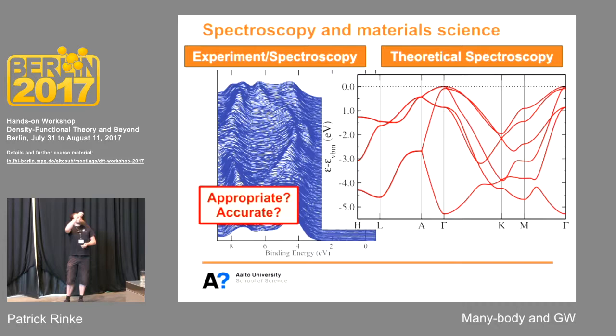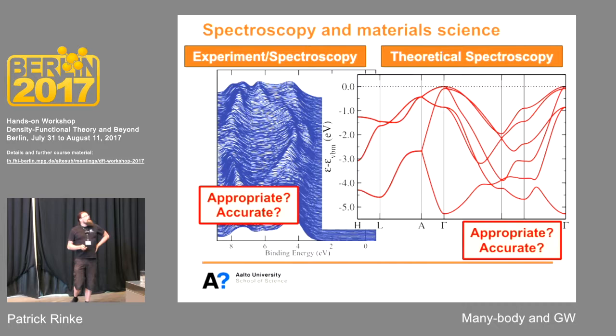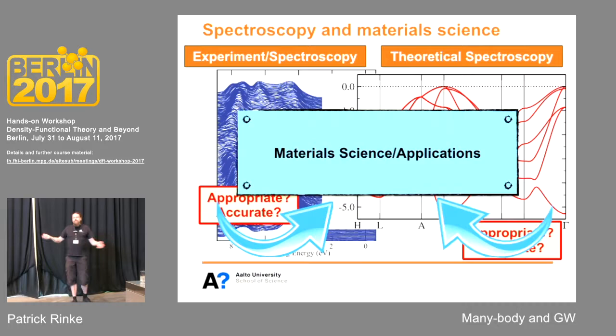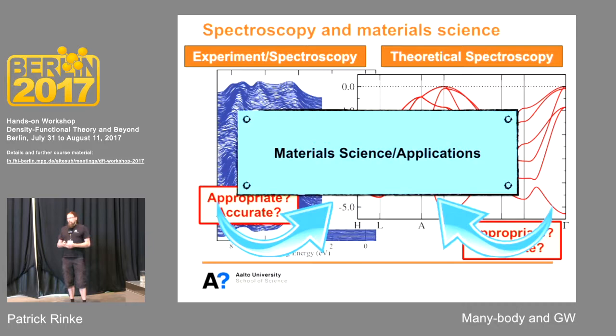This is where theoretical spectroscopy can help and complement. It's a term that only fairly recently came about, where you can try and do exactly the same as an experiment but now in theory and in the computer. We have to ask ourselves the same questions: is the methodological framework we're using appropriate? Remember the question I posed — why are we not doing this with DFT? And what's our accuracy? Because ultimately we want to do material science, physics, chemistry, applications, and discover new phenomena.